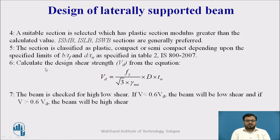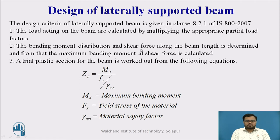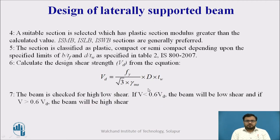Next, we calculate the design shear strength using: Vd = (Fy / (√3 × γM0)) × D × TW, where D is the depth, TW is the thickness of the web, Fy is the yield strength, and γM0 is the partial safety factor. We then check for high shear or low shear. If the factored shear force V is less than 0.6 Vd, we take the low shear case; if V is greater than 0.6 Vd, we design it as a high shear case.